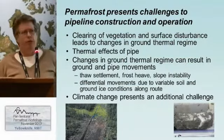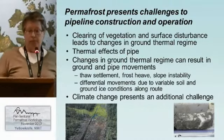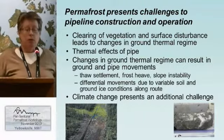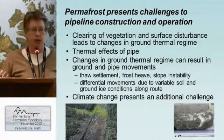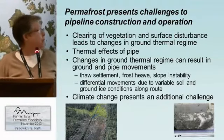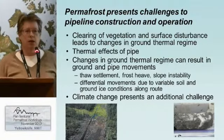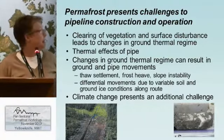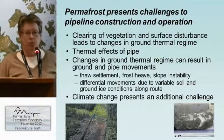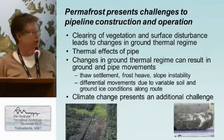Pipelines aren't too different from other linear infrastructure. They face similar challenges. When we clear the vegetation and disturb the surface — in other words, remove that natural insulating layer — we can cause the ground to warm up and get thawing. We also have thermal effects associated with the pipe itself. Depending on what's flowing down the pipe, it may be warmer or colder than the surrounding ground. So we have to deal with thawing and freezing, which can cause ground movement — thaw settlement, frost heave, and slope instabilities — impacting both the environment and the integrity of the infrastructure.